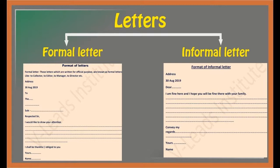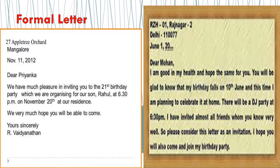Letters are of two types, children: formal letter and informal letter. Formal letters — we write to the editor, newspaper, magazine, director, or our principal. Informal letters — to our friend, calling to a birthday party, vacation, submitting. In formal letters, we write the date and address on the left side. For example: 'Dear Priyanka, we have much pleasure to invite you to the 21st birthday party.'